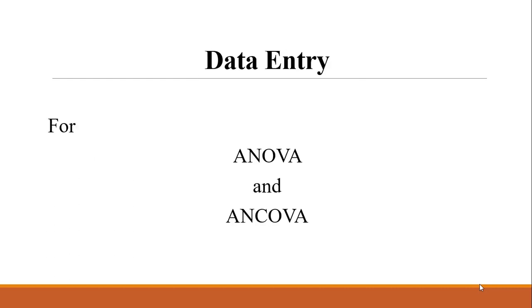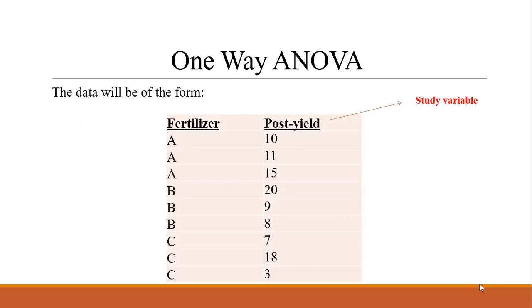Now I will demonstrate the data entry method and data format for both analysis of variance and analysis of covariance, to make the concepts clearer. For one-way ANOVA, we need to write two columns: first for the factor, which is the fertilizer, and second for the study variable. In the study variable column, we write the data.